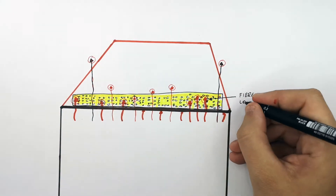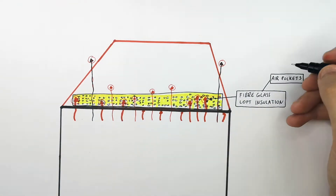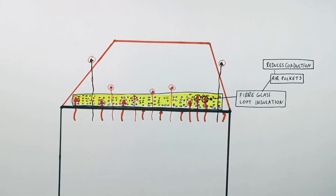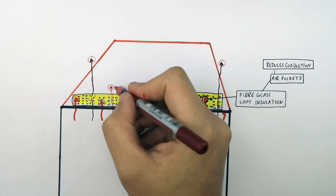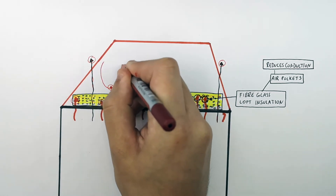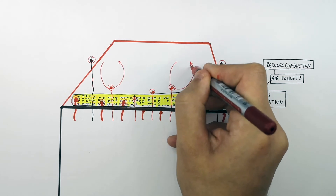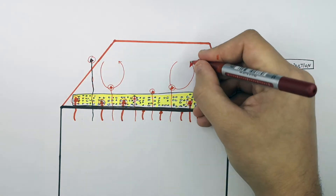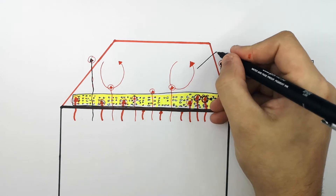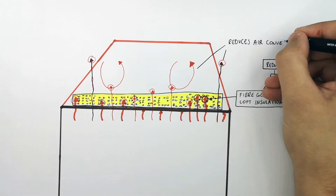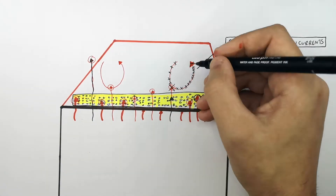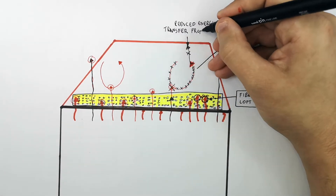This fiberglass loft insulation has air pockets in it. It reduces the conduction of energy from inside the house and into the roof cavity through the walls and the ceiling. Without loft insulation, more energy would be transferred to the air particles in the loft, forming a convection current — warmer air rises, leading to more energy being transferred out of the roof into the surroundings outside. Because less energy is transferred into the roof cavity, this reduces air convection currents in the loft and therefore reduces energy transfer from the roof to the outside surroundings.